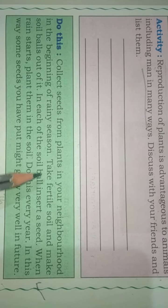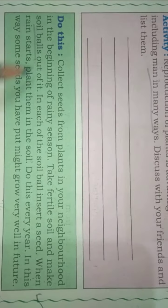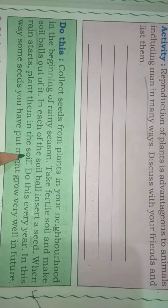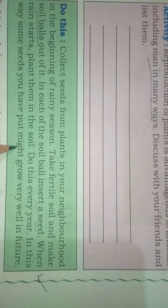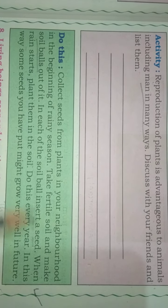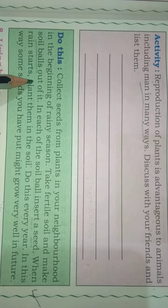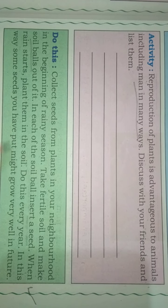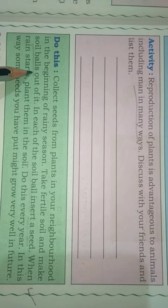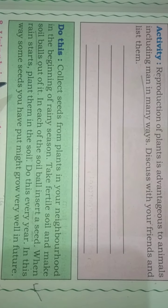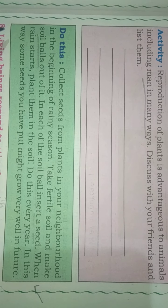Here is a small activity. Collect seeds from plants in your neighborhood at the beginning of the rainy season. Take fertile soil and make soil balls out of it. In each soil ball, insert a seed. When rain starts, plant them in the soil. Do this every year. In this way, some seeds you have put might grow very well in future. In Tamil Nadu and Andhra Pradesh, they have done this with soil balls — going out for excursion or picnic and throwing soil balls with seeds inserted. When the rain comes, the plants grow from those seeds.